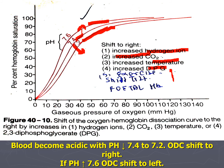Shift to the left of the oxygen-hemoglobin dissociation curve occurs in the following conditions: in fetal blood, because fetal hemoglobin has greater affinity for oxygen than adult hemoglobin; decrease in hydrogen ion concentration; and increase in pH — that is, alkaline conditions.